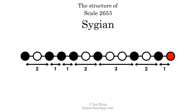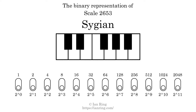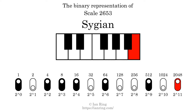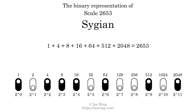The binary representation of this scale is determined by mapping tones of the scale to binary digits. Each binary digit represents a power of 2. To get the scale number, we add the powers of 2 together. The powers of 2 that are present in the scale, all added together, equals 2,653. That is why the scale number, in decimal, is 2,653.